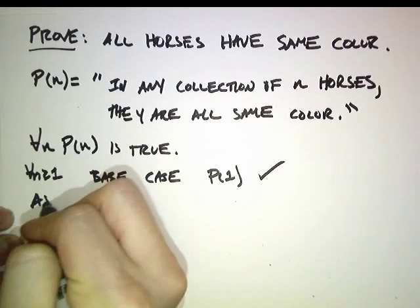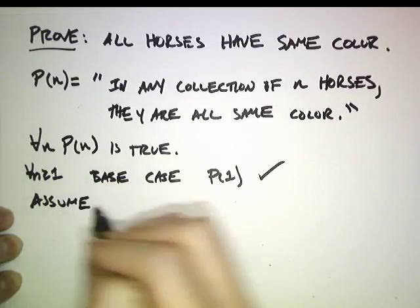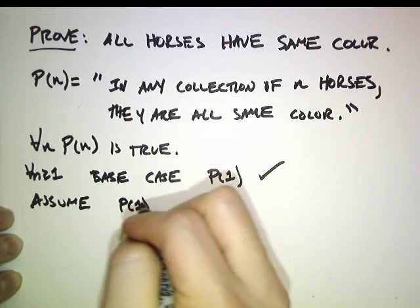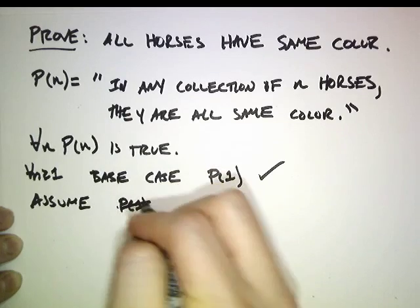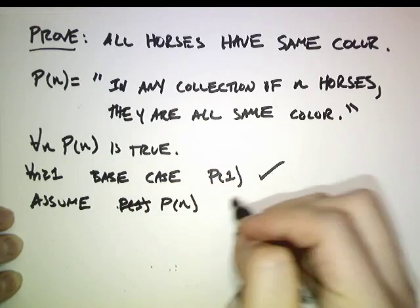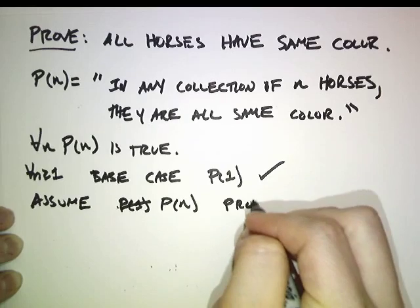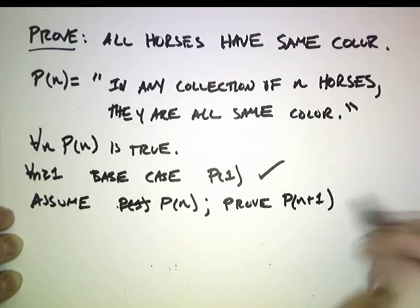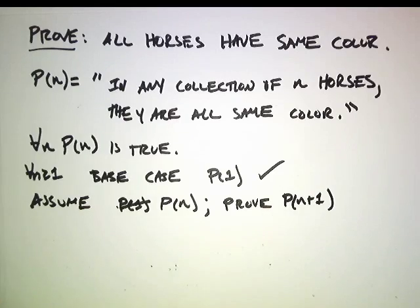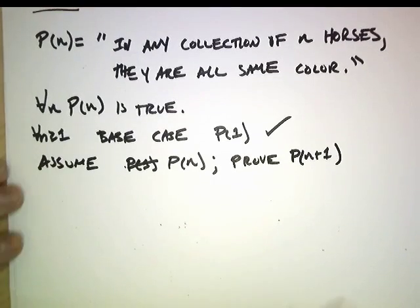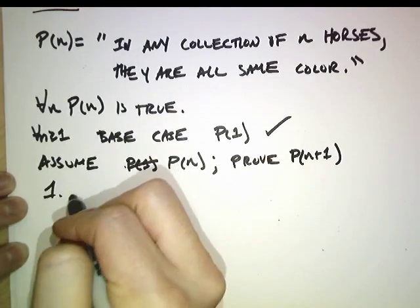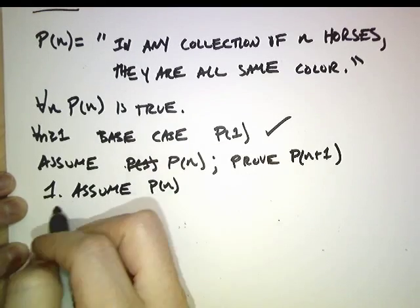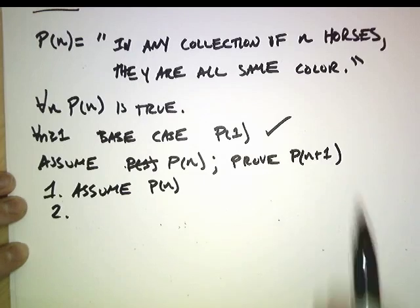Now let's assume P(n) and prove P(n+1). So we need to show that P(n) implies P(n+1). The first step is to assume P(n), and now we need to prove P(n+1).